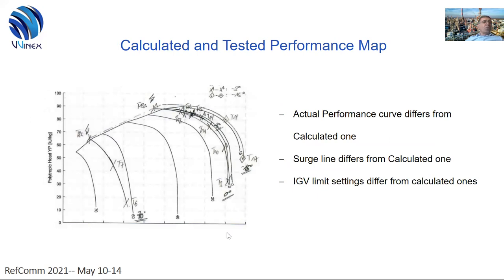To demonstrate this point, here is the performance map of the real tested blower. You can see how much the tested performance curve differs from the calculated one. The performance data recorded at 70 degrees of inlet guide vane position is more close to the 60 degrees that was calculated. The measured surge line is quite different from the calculated one, and the IGV limit settings are also different from the calculated one. All these factors create difficulties during the testing of the panel together with the compressor on site, or for fine-tuning of the controller routine.